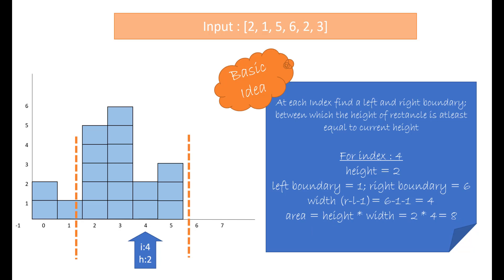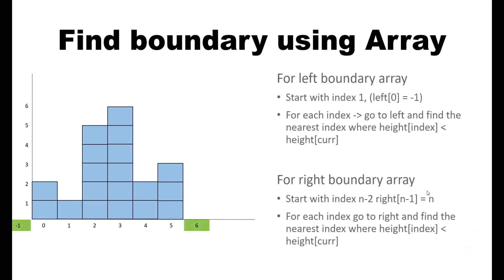The main idea here is how to find the left boundary and the right boundary for every index. The brute force or basic solution would be by using an array. For the left boundary array we start at index 1 and go towards left. Initially we put the index of 0 in left as minus 1 because we will find a lesser height only beyond the array. For the right, at n minus 1 the right would be n because we go outside the array. Once we have fixed index 0 and index n minus 1, we start from 1 and n minus 2 for left and right, going left or right to find the boundary where the height is less than the current height.